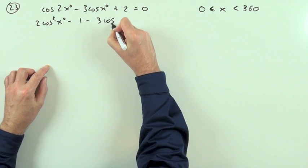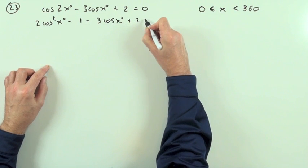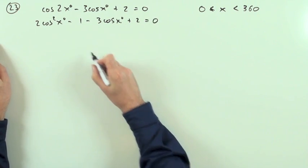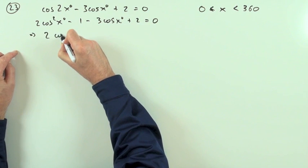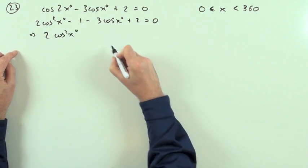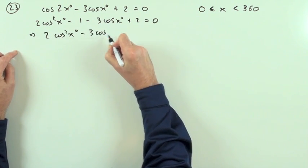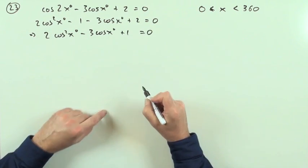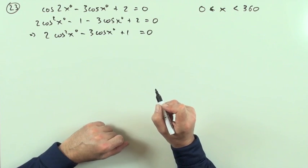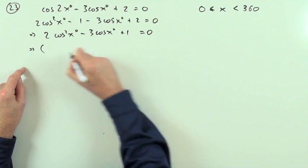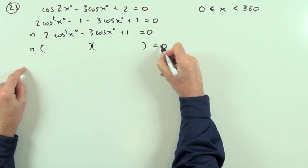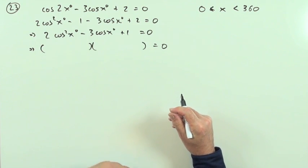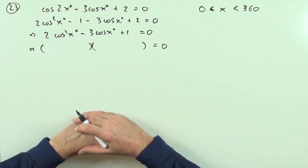Tidy that up: I've got 2cos²x minus 3cos x plus 1 equals 0. That's a quadratic in cos x, so it's going to be a bracket times a bracket. It's paper 1, so I can't possibly use the formula, but that could be a possibility if it was in paper 2.